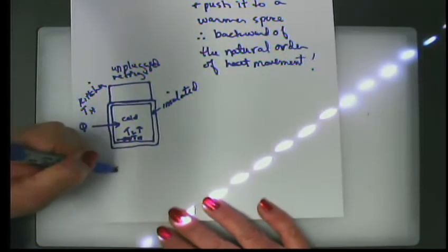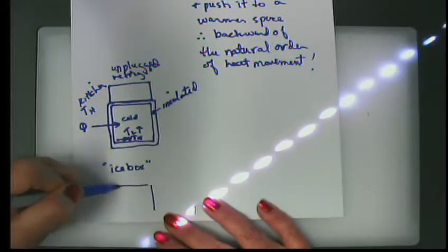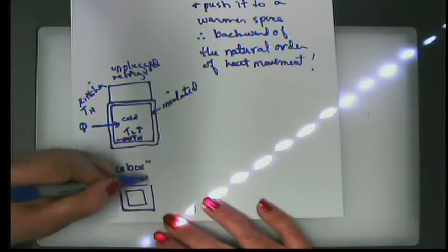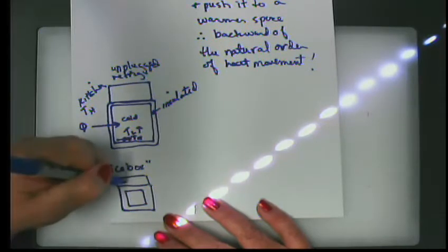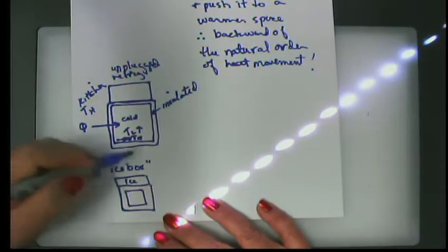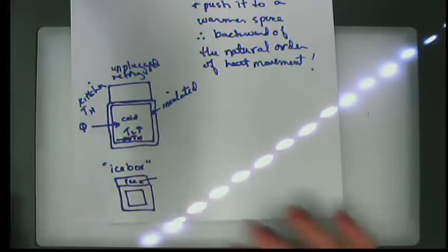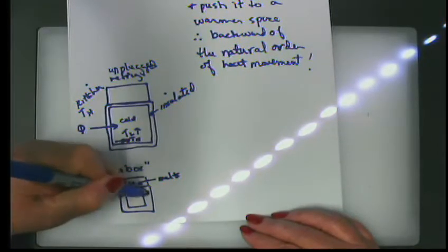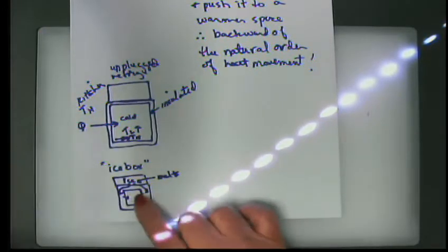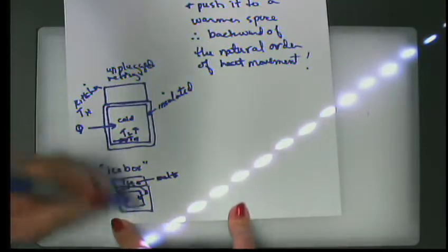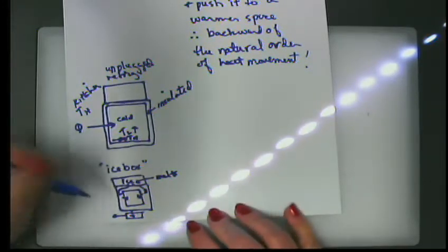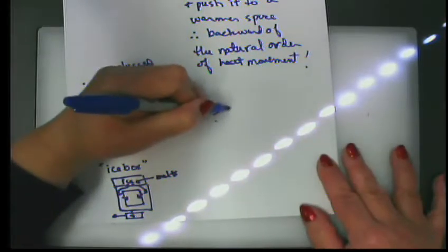Normally what happens with heat is if you have an unplugged refrigerator, an old-style one where the freezer is on the top and the refrigerated space is on the bottom, if this space is cold and the temperature is higher outside, heat will naturally move from the higher temperature space into the lower temperature space, and the lower temperature will increase until it approaches T sub H.